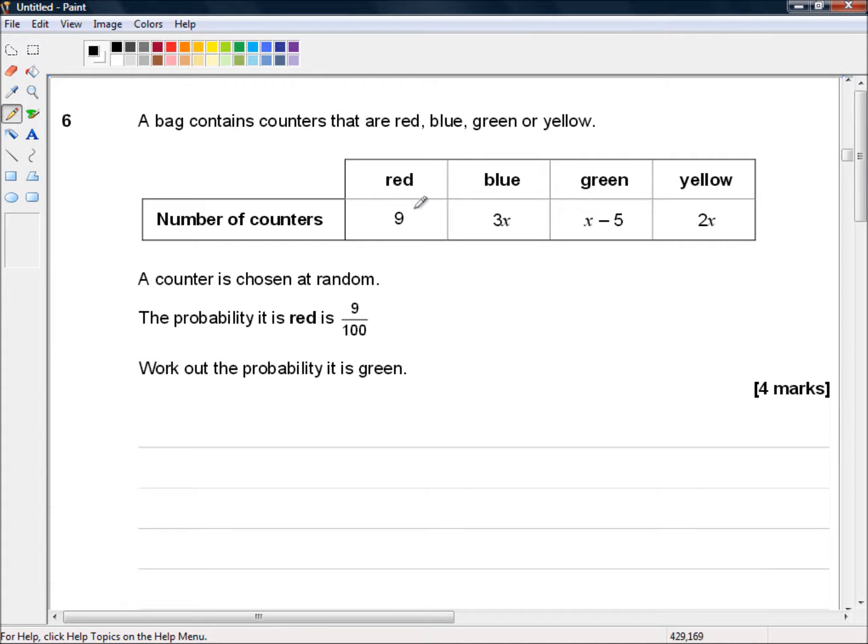Well, we know there are 9 red counters and the probability is 9 out of 100. So that means there must be 100 counters in total.